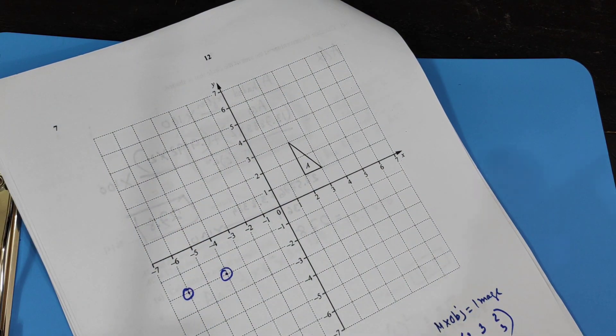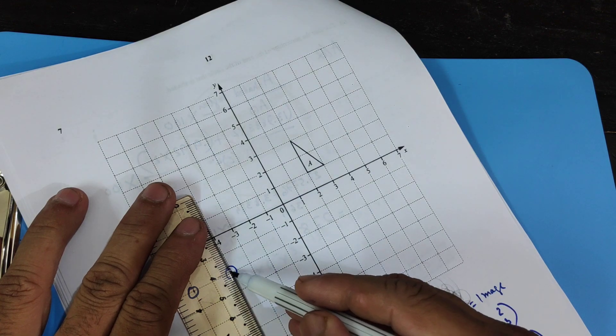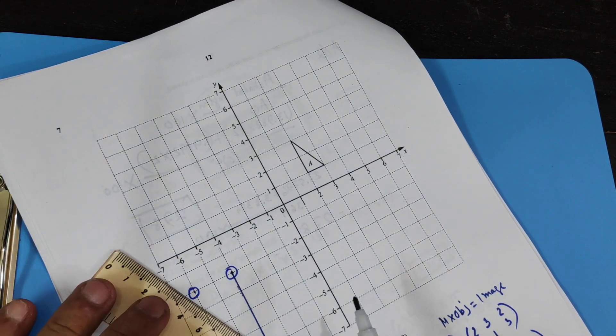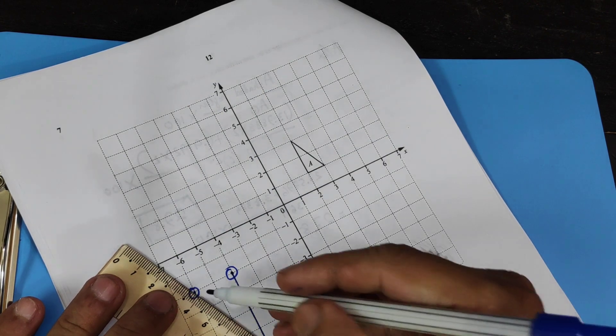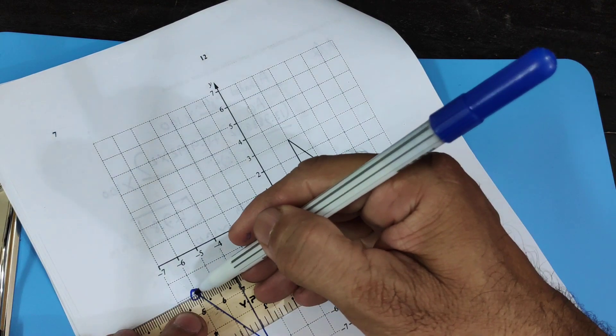So using this ruler to draw that, I have this, and then join these two, and then join that.